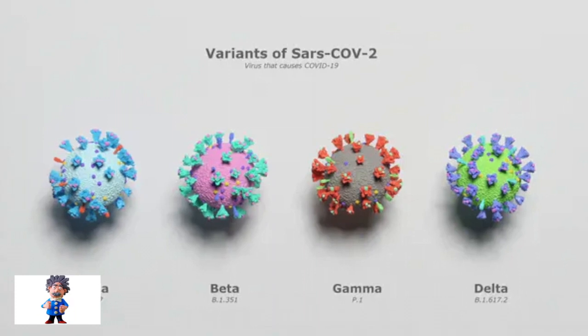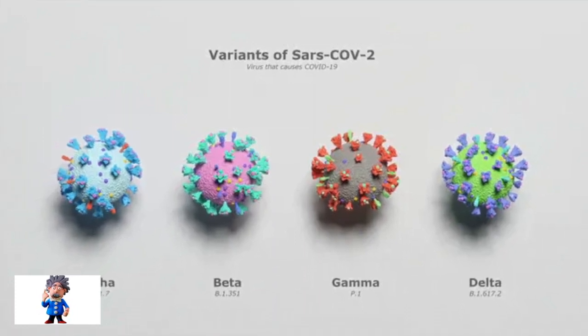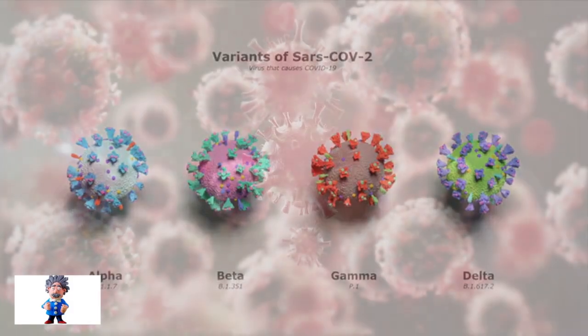Contrary to scientific predictions, the Omicron variant has emerged from the mid-2020 strain and not from the Delta variant.